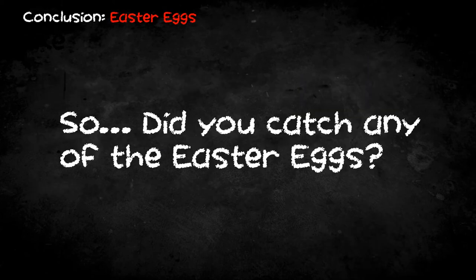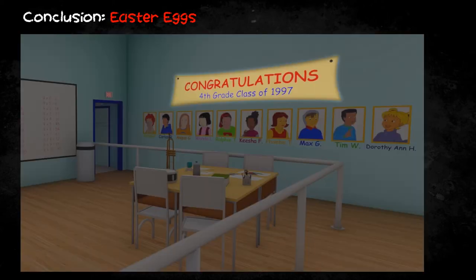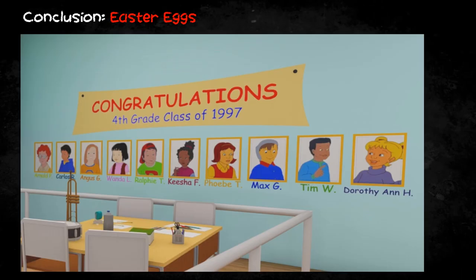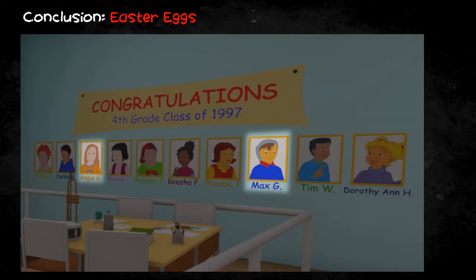But before we leave, did you catch any of the Easter eggs? Any of those small personal details that help tie together my ride, this presentation, and valuable things in real life? In the ride story, you as the writer are a member of Miss Frizzle's class immediately after the one in the show. The pre-show classroom commemorates the accomplishments of the 4th grade class of 1997, which is the year the four-season show stopped airing. Also, if you recall from the show, there were only 8 students in Miss Frizzle's class. Here, there are 10. This is Max and Angus Gerber, two of my nephews and some of the most creative little minds I know.